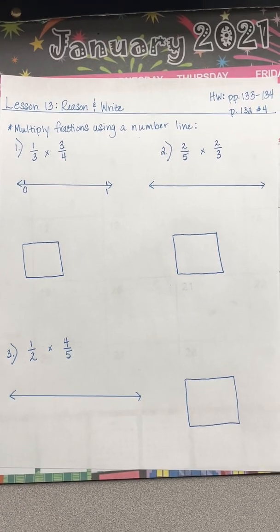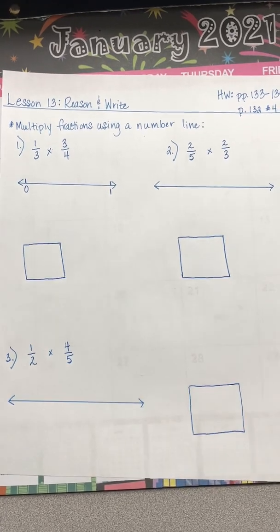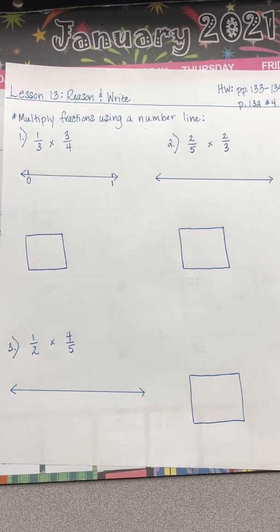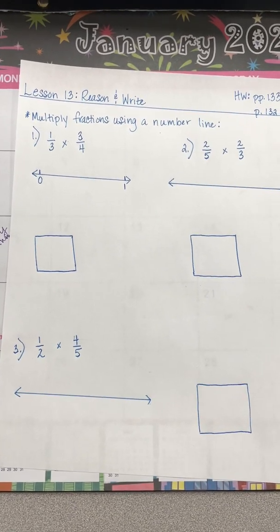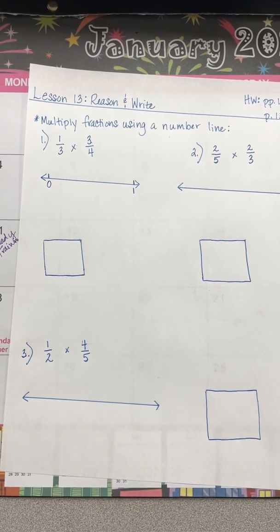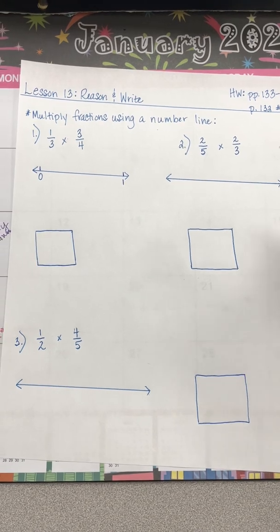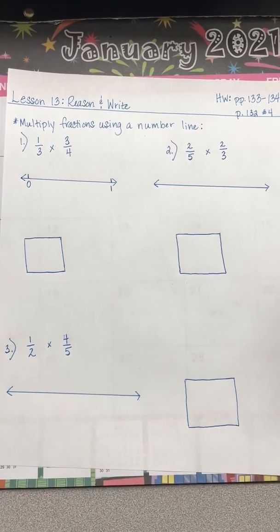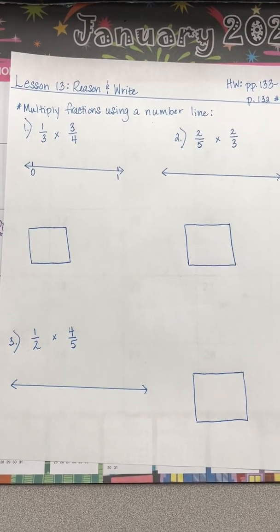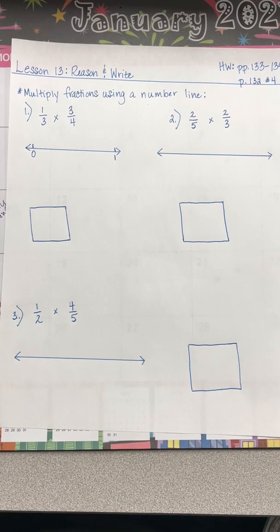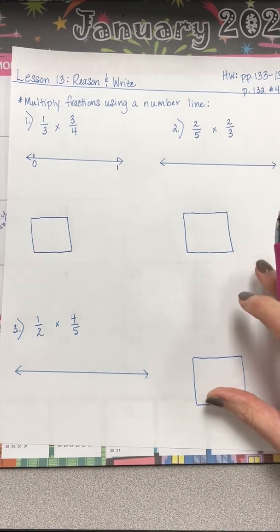Today we're going to be talking about multiplying fractions using a number line — why we split the number line up the way we do, and how we can come up with a solution to multiplication problems involving fractions. We're also going to demonstrate these same problems using area models and by solving the problems numerically as well. Go ahead and take a moment to write down your notes. You can pause the video. Alright, let's get started.